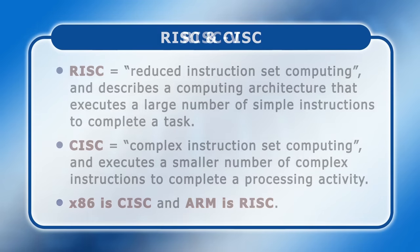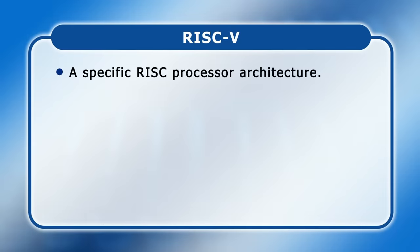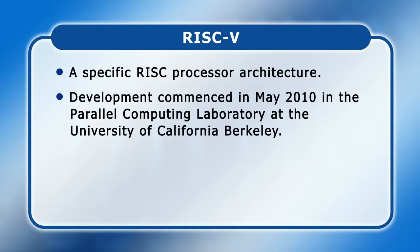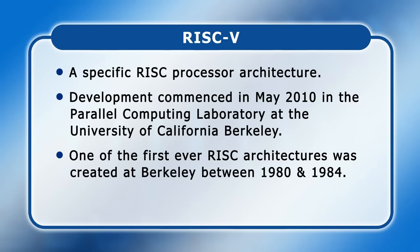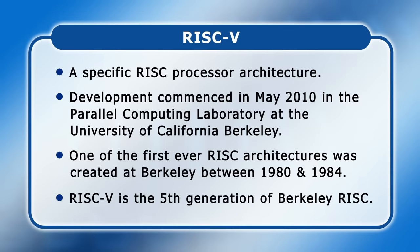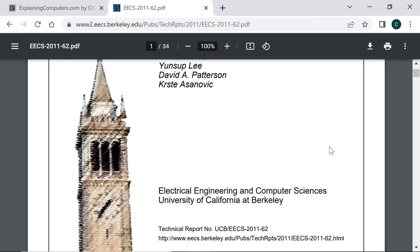So what about RISC-V? RISC-V is a specific RISC processor architecture whose development commenced in May 2010 in the parallel computing laboratory at the University of California, Berkeley. One of the first ever RISC architectures was created at Berkeley between 1980 and 1984, with RISC-V getting its name because it's the fifth generation of Berkeley RISC. RISC-V was initially created to support research and education, with the first RISC-V instruction set manual published as an open source document in May 2011.